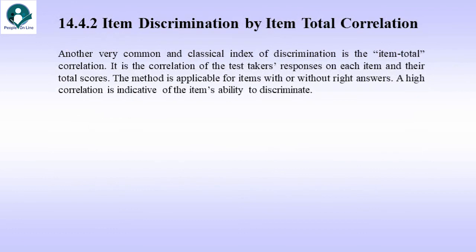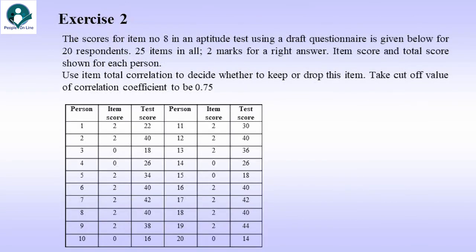Item discrimination by item total correlation. Another very common and classical index of discrimination is the item total correlation. It is a correlation of the test taker's responses on each item and their total scores. The method is applicable for items with or without right answers. A high correlation is indicative of the item's ability to discriminate.